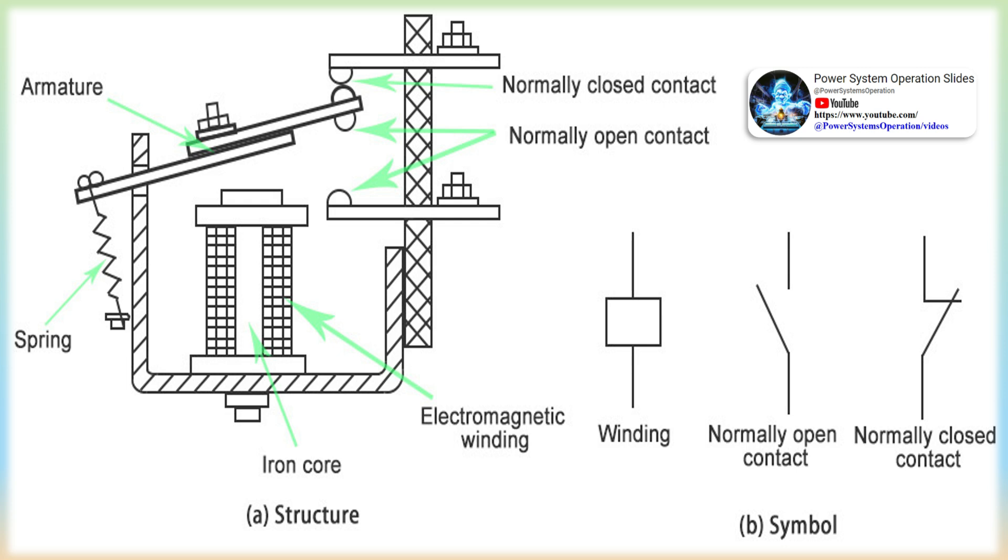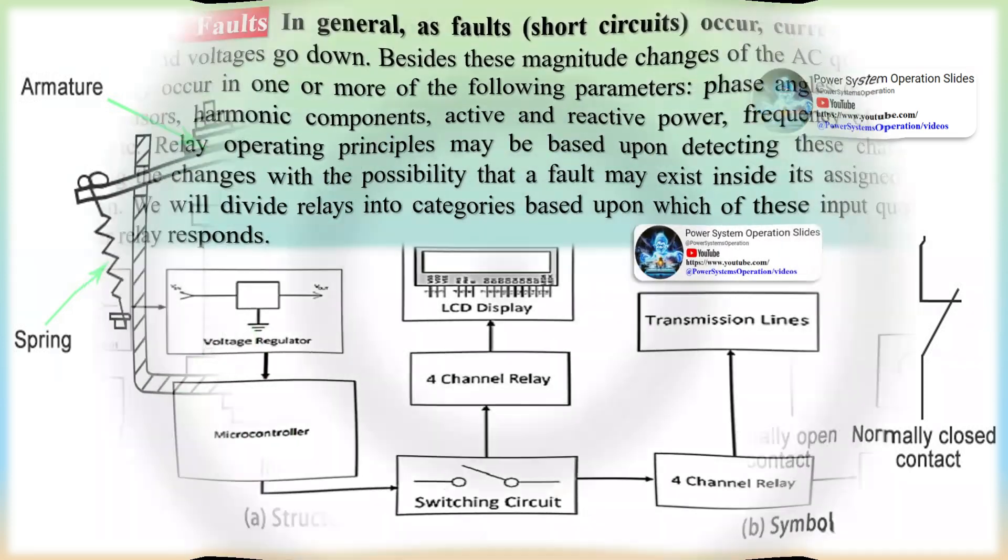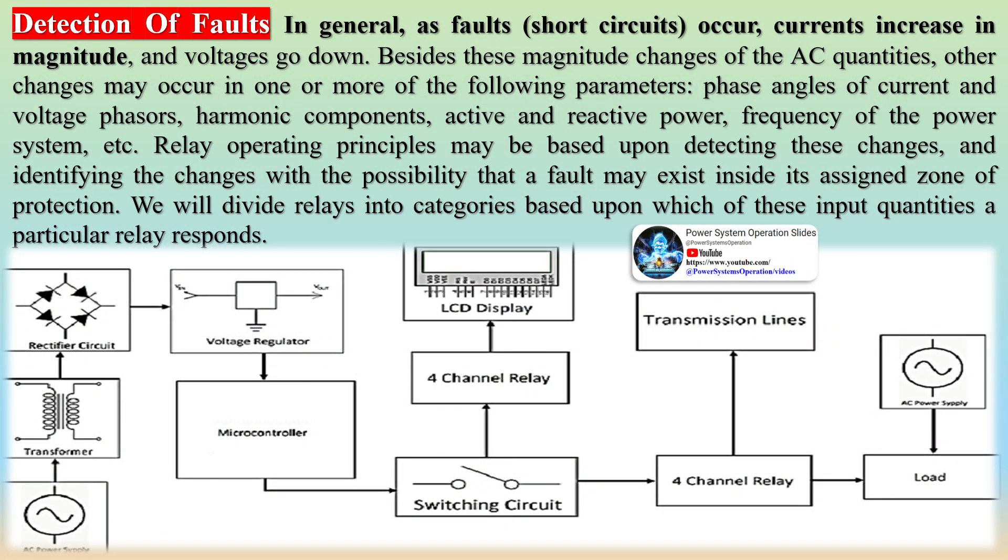This problem of being able to distinguish between normal and abnormal conditions is compounded by the fact that normal in the present sense means that the disturbance is outside the zone of protection. This aspect, which is of the greatest significance in designing a secure relaying system, dominates the design of all protection systems.